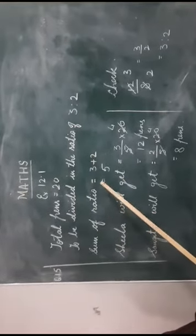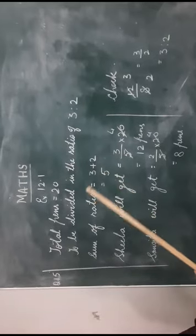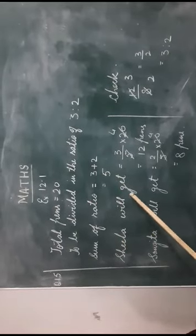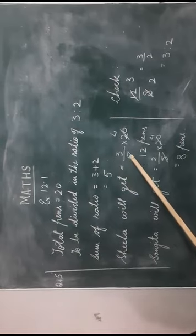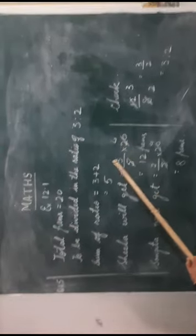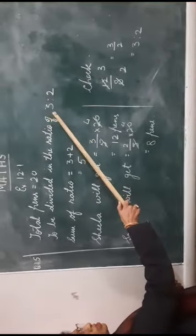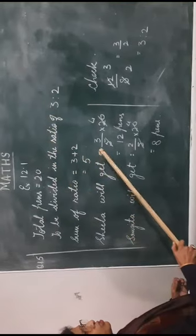First of all we will add the ratios like 3 plus 2 equals 5. Then Sheila will get 3 upon 5 into 20. This 3 upon 5 into 20, where 3 to 2 is the ratio, and the first part of these pence is Sheila's.